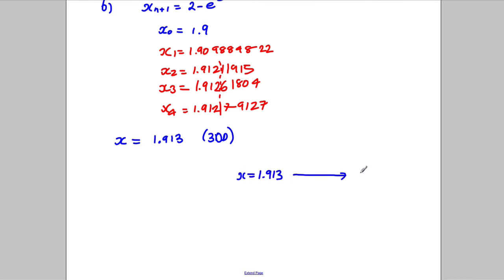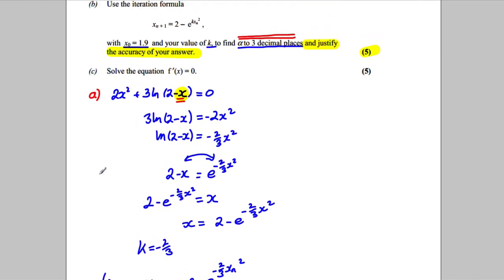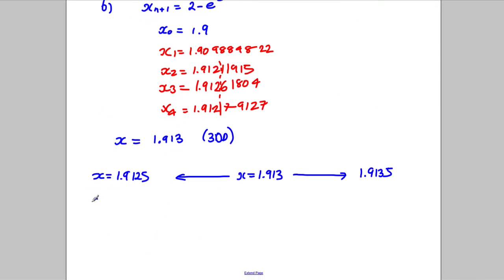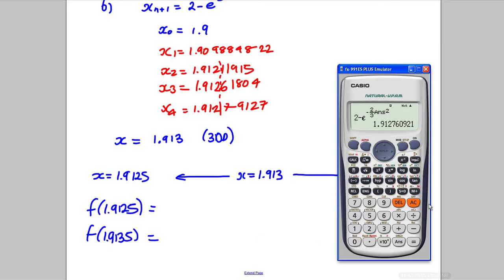To justify, we take x = 1.913 and evaluate at its upper bound x = 1.9135 and its lower bound x = 1.9125. We substitute those values into f(x) = 0. So we work out f(1.9125) and f(1.9135), and hopefully we get a change of sign.